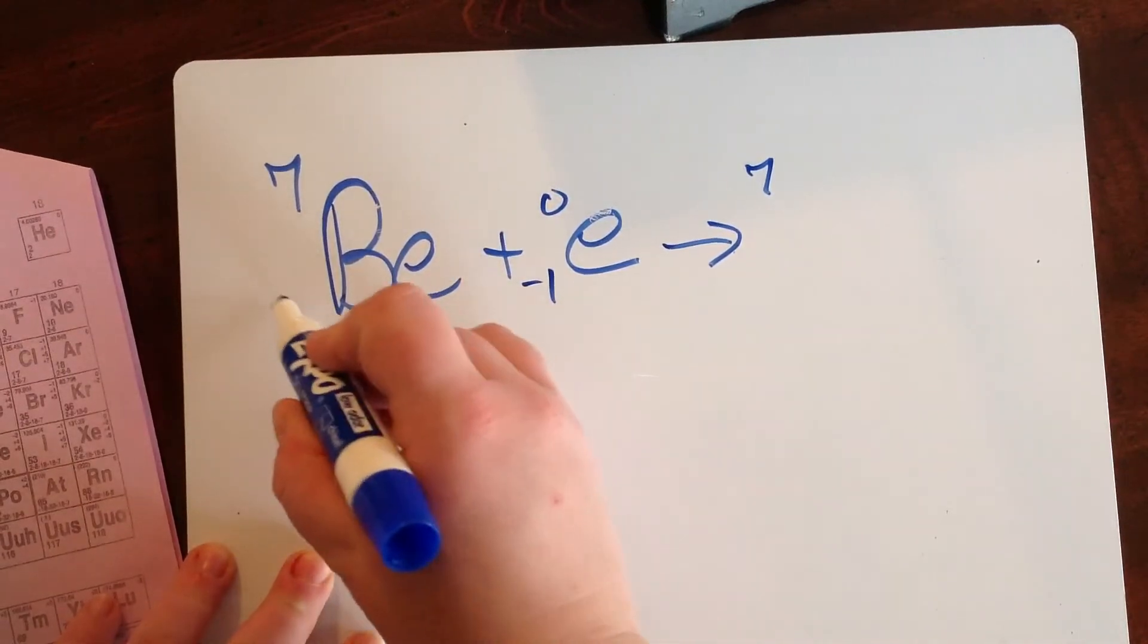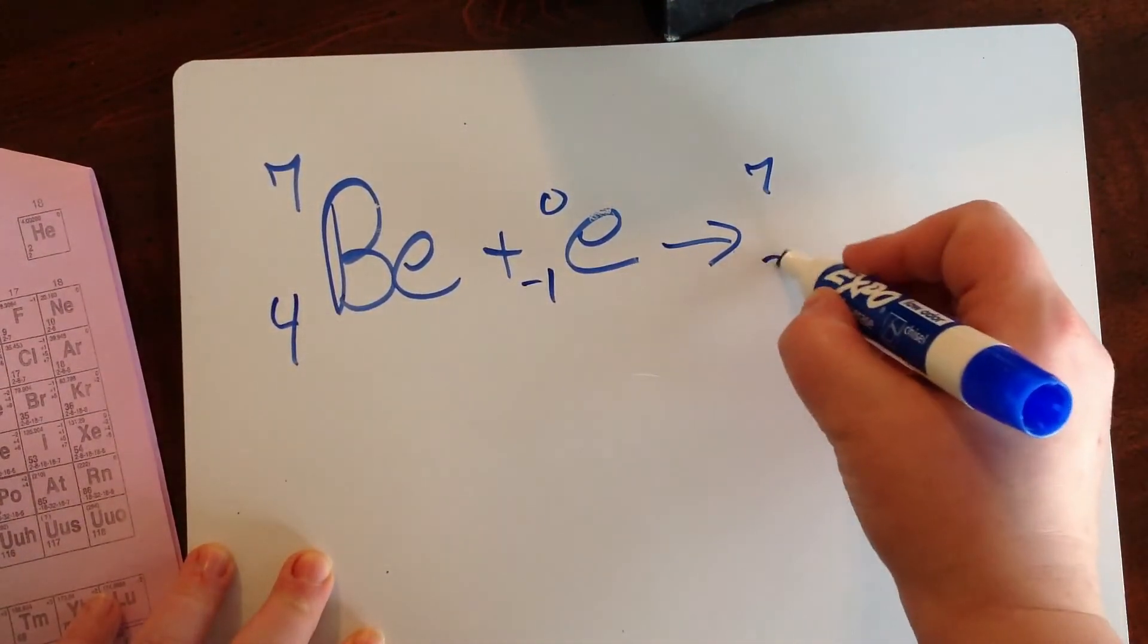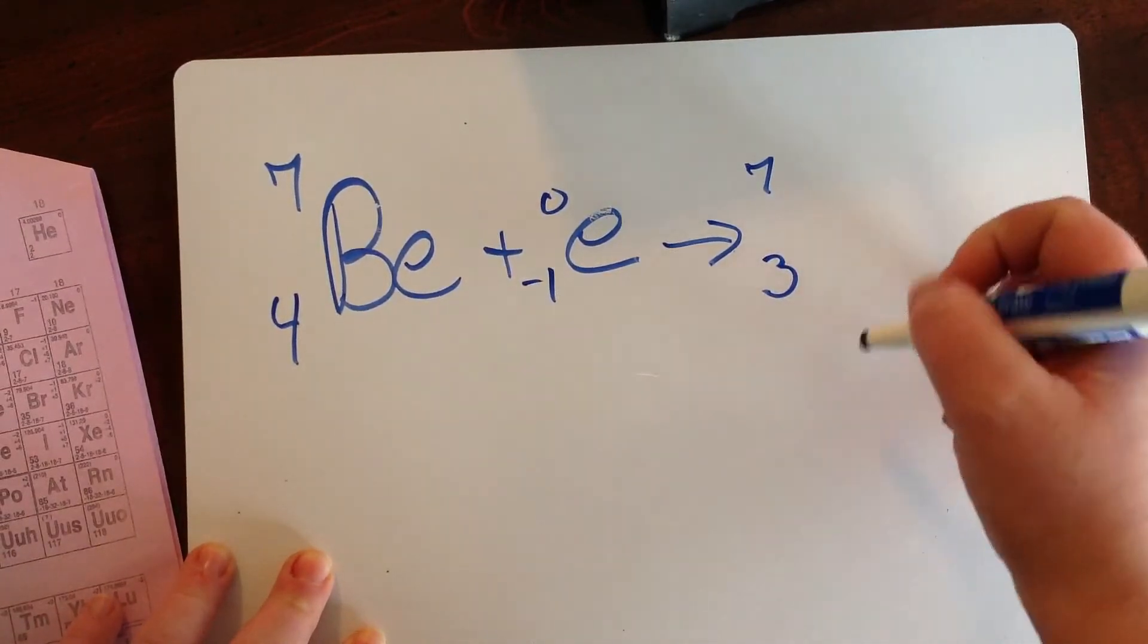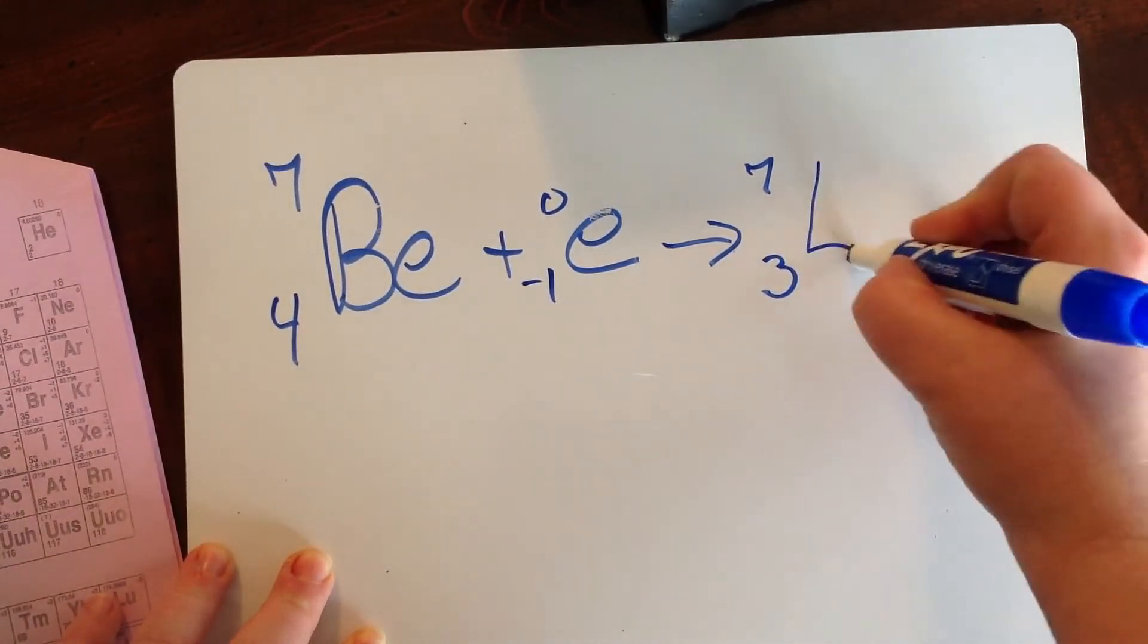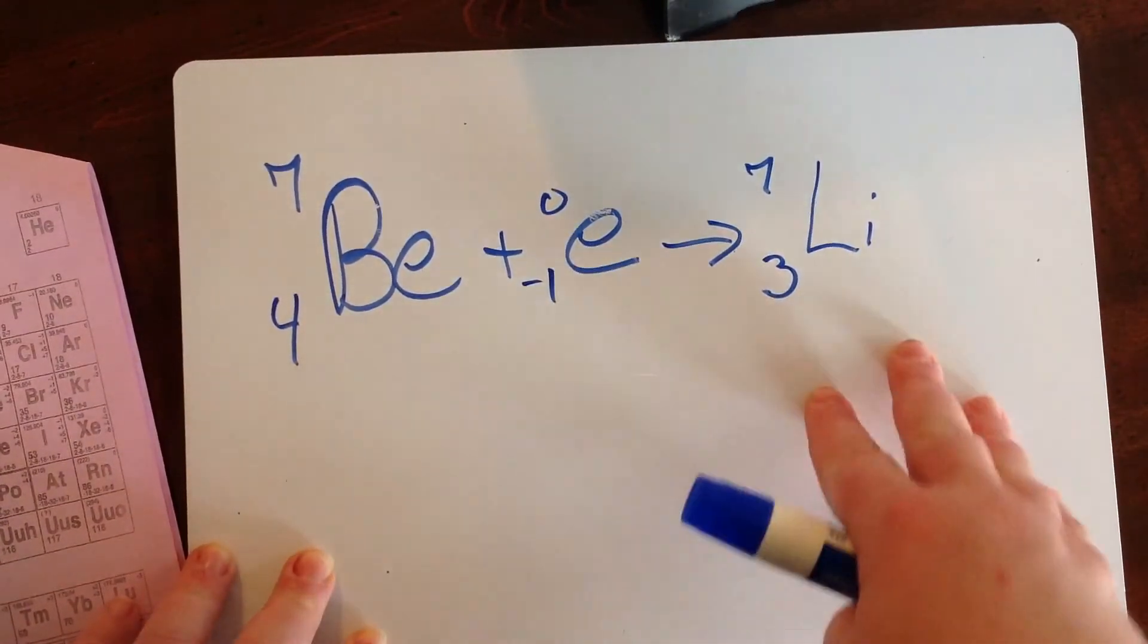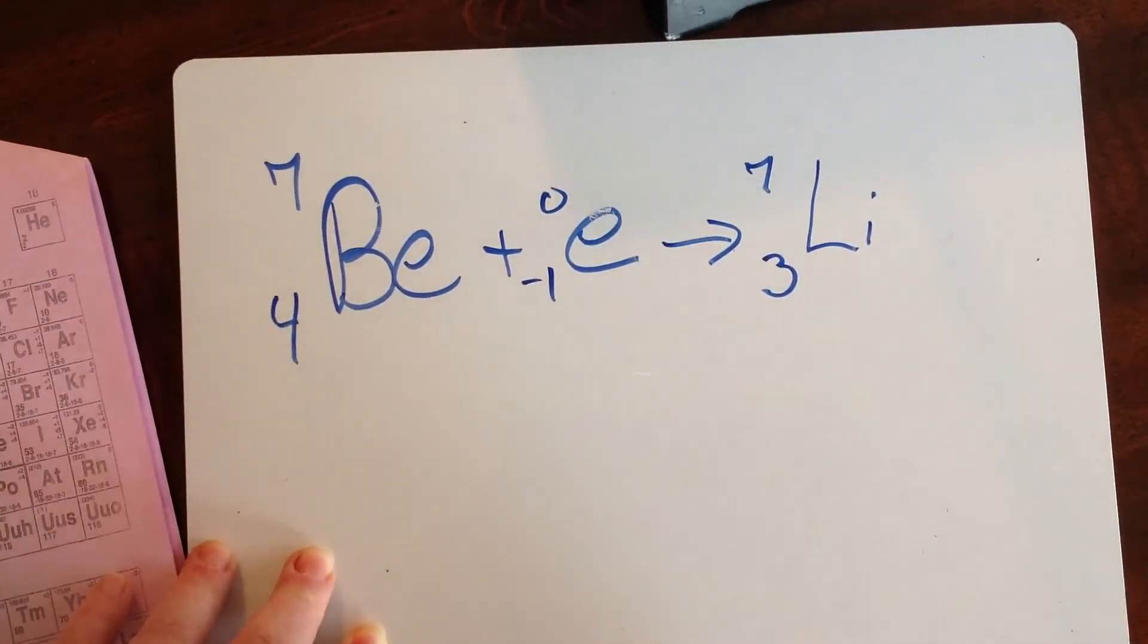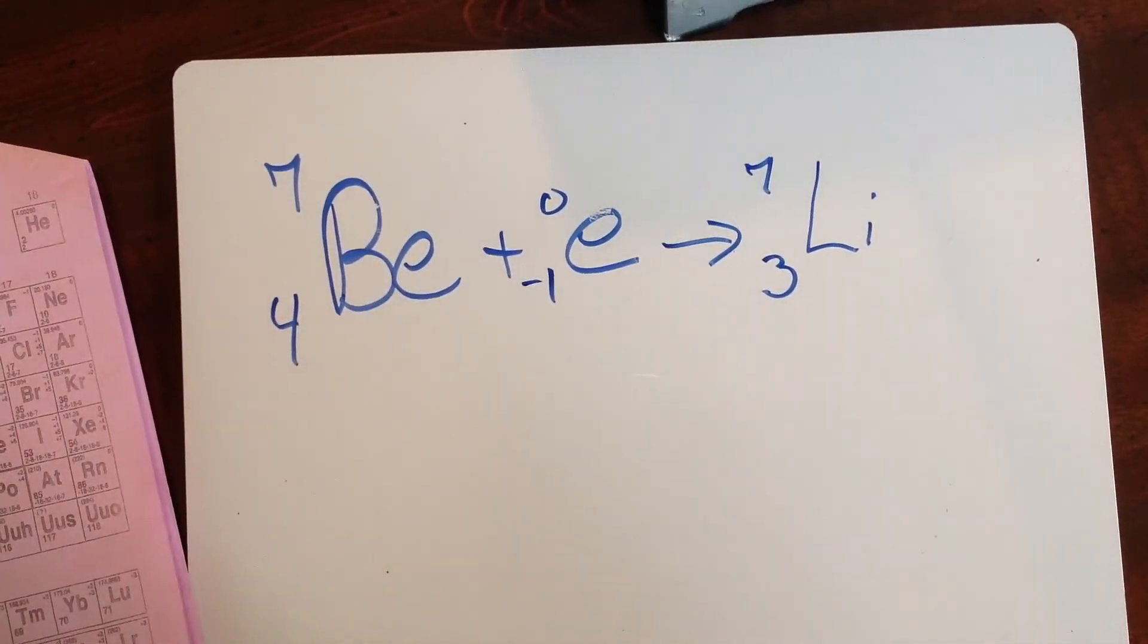Beryllium, when we look up its atomic number, is 4. And 4 plus negative 1 is 3. And 3 is the element lithium. So again, the sum of the subscripts on the left equals the sum of the subscripts on the right. Sum of the superscripts on the left equals the sum of the superscripts on the right.